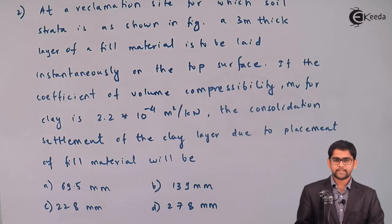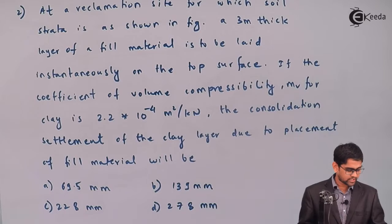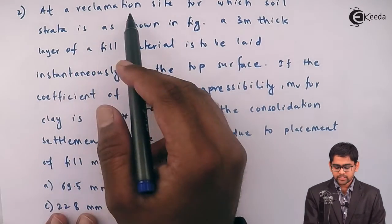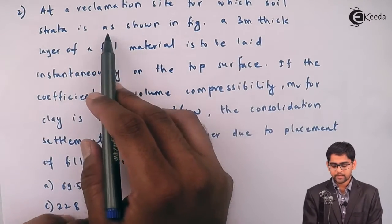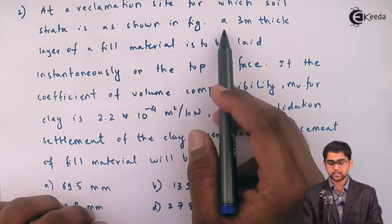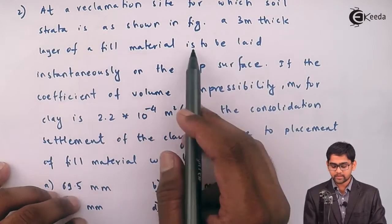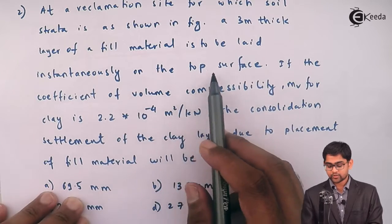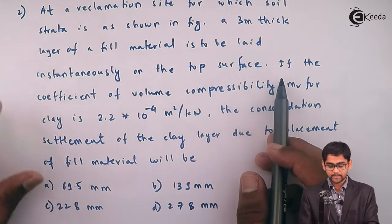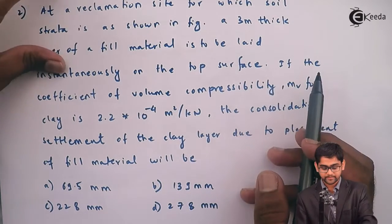Welcome students. We will go ahead with the second problem in the consolidation of soil. The statement goes as follows: at the reclamation site, for which the soil strata is as shown in the figure, a 3-meter thick layer of fill material is to be laid instantaneously on the top of the surface. The figure is shown on the next page.